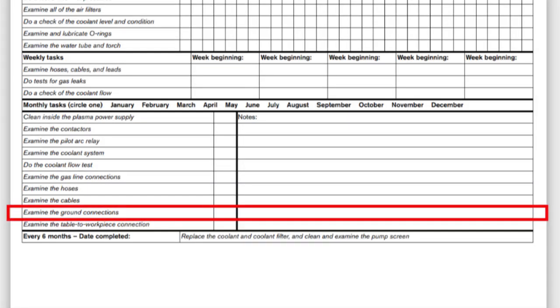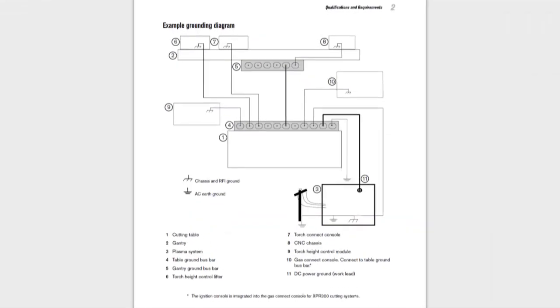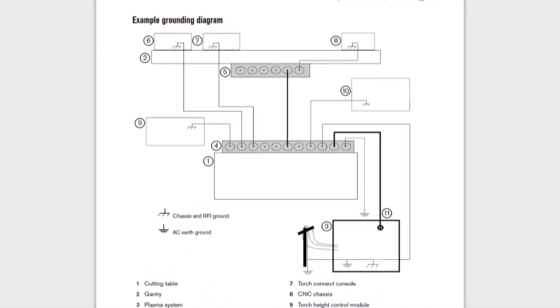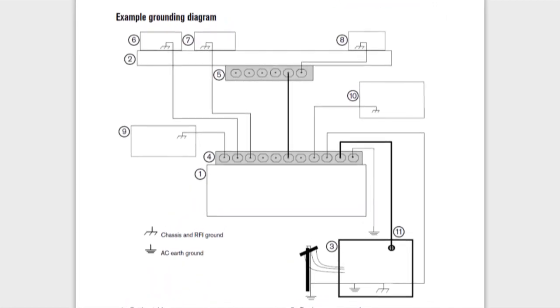Next, ensure there is proper grounding. Proper grounding is important for reliable and safe system operation. Using the grounding information located in the XPR instruction manual, examine the grounding cables for damage, cracked insulation, melted or burned areas, correct cable size, and correct routing.